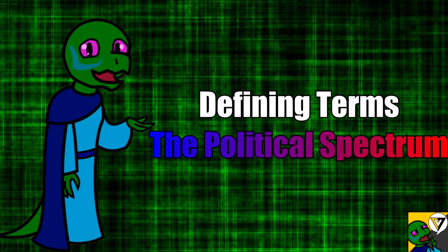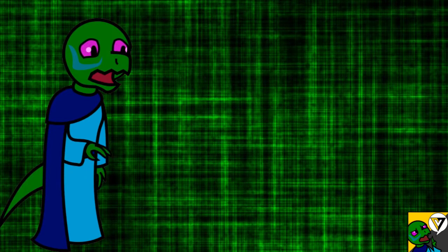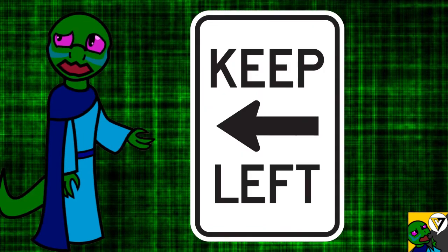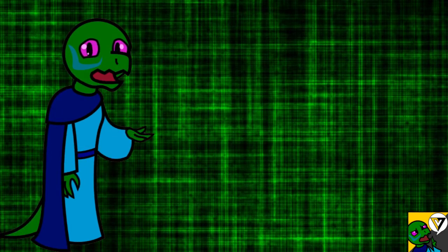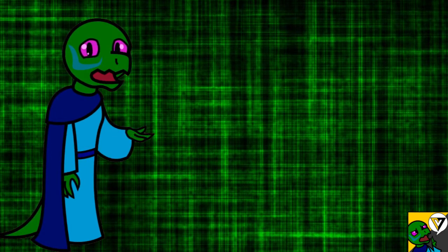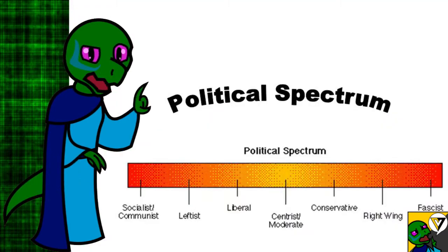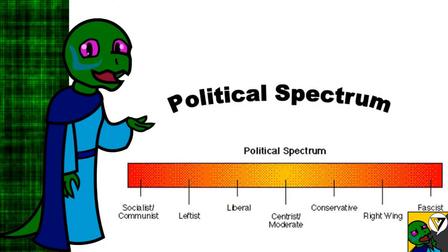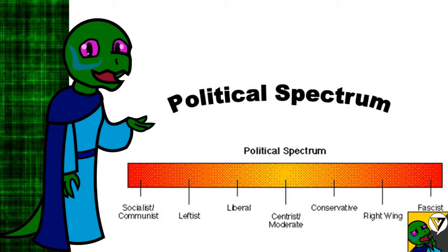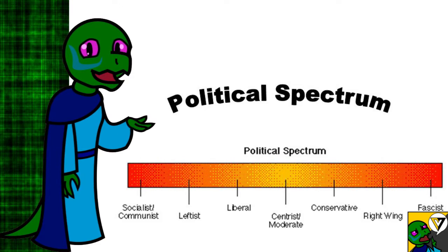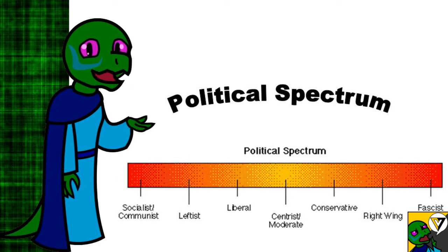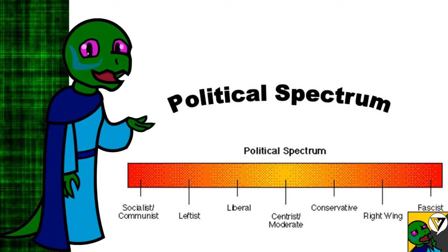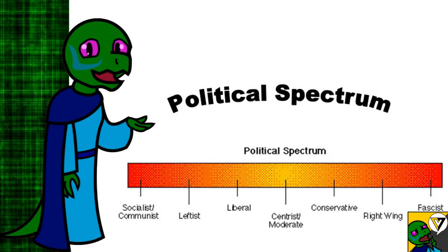Defining terms: the political spectrum. If you are involved in politics enough, you have heard these terms being thrown around — leftist, left-leaning, right-winger, centrist. But what do these terms mean? They're referencing something called the political spectrum. It's an axis meant to measure and categorize a person or ideology's set of beliefs and opinions on a wide range of subjects, and place them on a spectrum in accordance with how much or how little they have in common with either extreme.